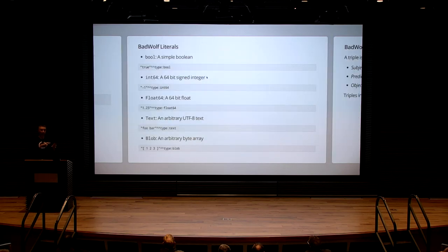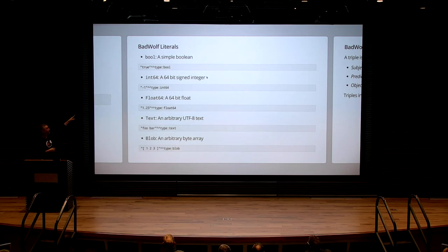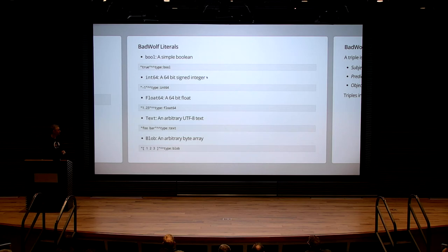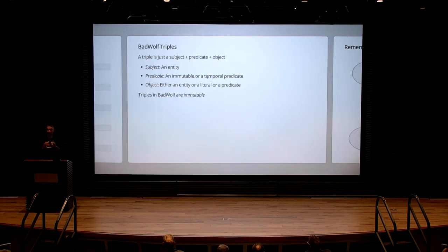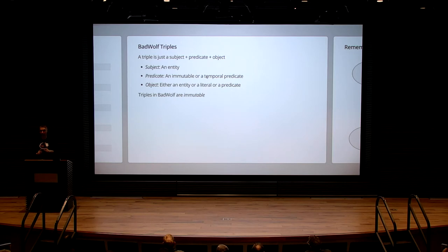Some statements are considered properties that describe values, like the population example. We borrow RDF notation here — you have the value and the type, and you can have booleans, integers, floats, or text — that's all we support. Statements are expressed as what we call triples. Each triple has a subject, a predicate, and an object. The key thing to keep in mind: triples are immutable. If I write a triple, I cannot change it; if I change it, I'm creating another triple.